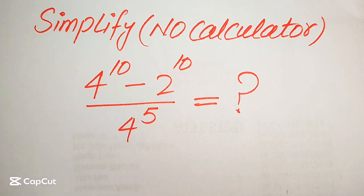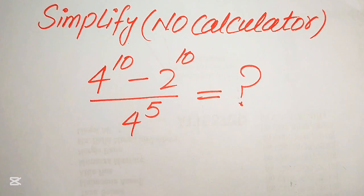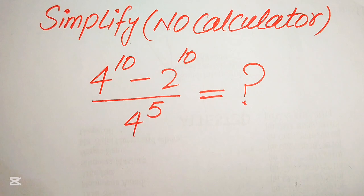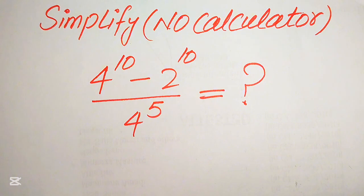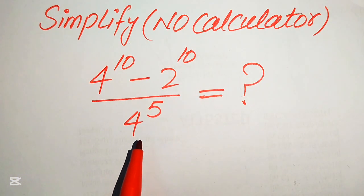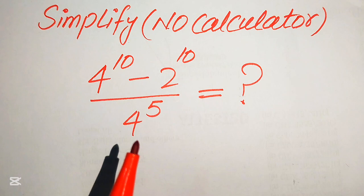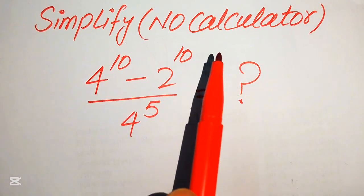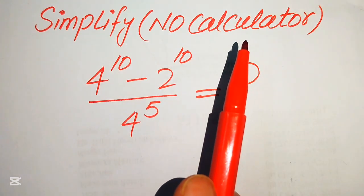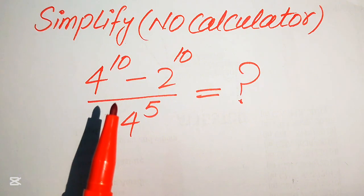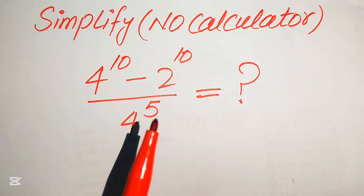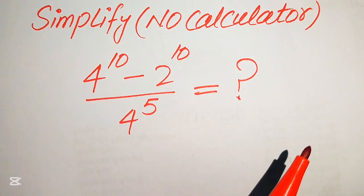We will simplify this algebraic expression into simplified form. We have 4 to the power of 10 minus 2 to the power of 10, divided by 4 to the power of 5. We will write this algebraic expression in simplified form without using a calculator — the calculator is not allowed, so all working will be done on paper or in our mind.